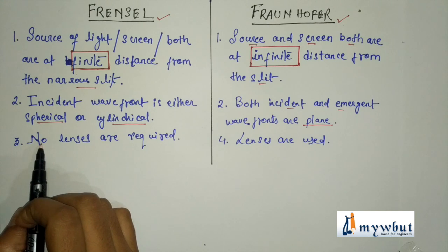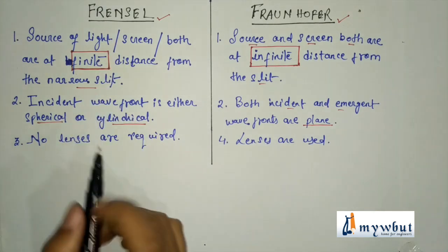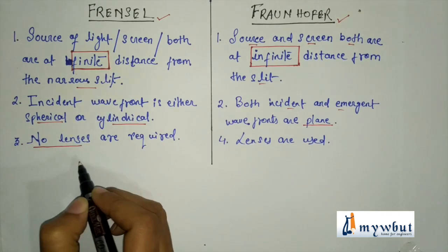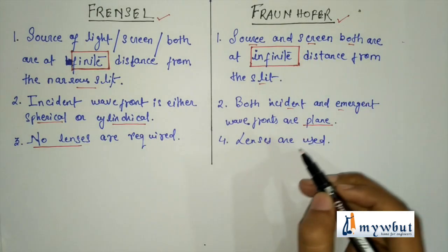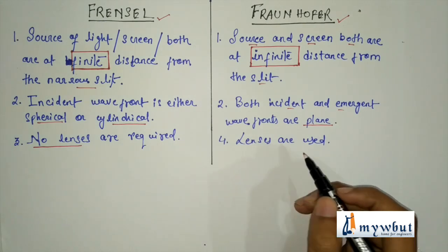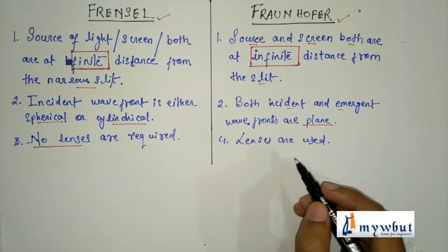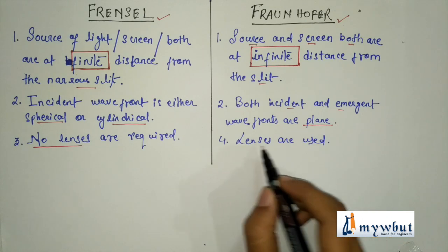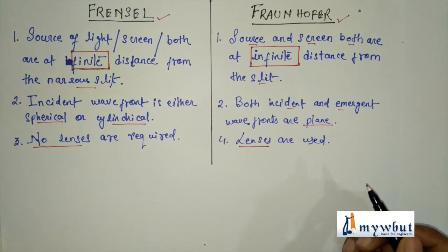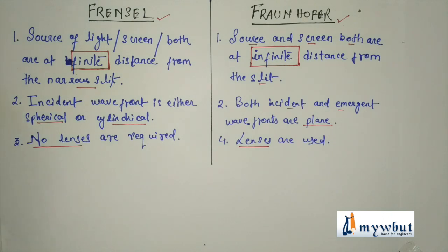Number three: in Fresnel diffraction, no lens is required. But in Fraunhofer diffraction — which we are going to study further and which we have also done in the laboratory — lenses are always used. Let me now show you a small schematic diagram of how Fresnel and Fraunhofer diffraction work.